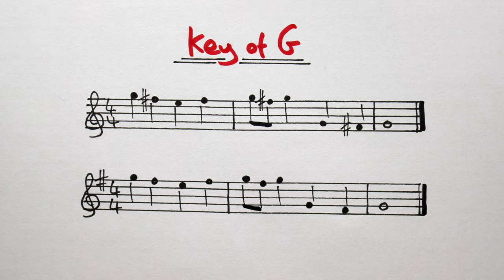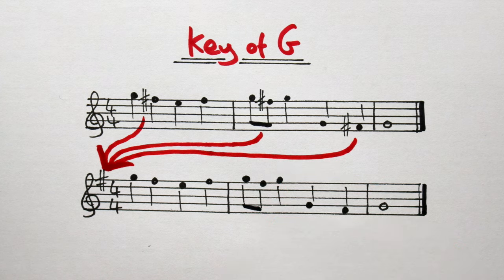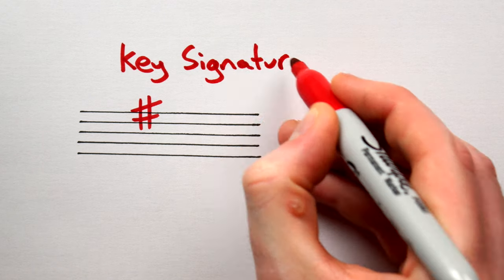Or this. I've done the same thing again. I've pulled out all the F sharps and condensed them into a single F sharp at the beginning of the tune. This master accidental, if you will, is called a key signature.